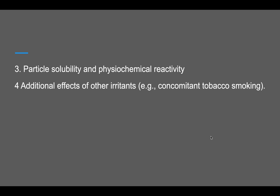Certain particles are soluble and react differently with the body. If the inhaled chemical is soluble, it produces a rapid acute response. If it is not soluble, it gives a chronic response and will be more fibrosing. Additionally, concomitant irritants — such as a person exposed to coal dust who is also smoking — will further increase the effect.